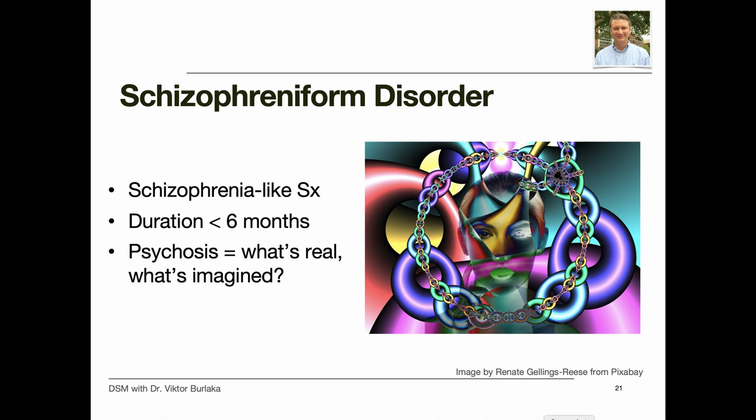Schizophreniform disorder is a type of psychotic illness with symptoms similar to those of schizophrenia but lasting for less than six months. Like schizophrenia, it is a type of psychosis — a person often cannot tell what is real from what is imagined, and it affects how people think, act, express emotions, and relate to others. If symptoms last longer than six months, doctors consider the person to have schizophrenia rather than schizophreniform disorder.